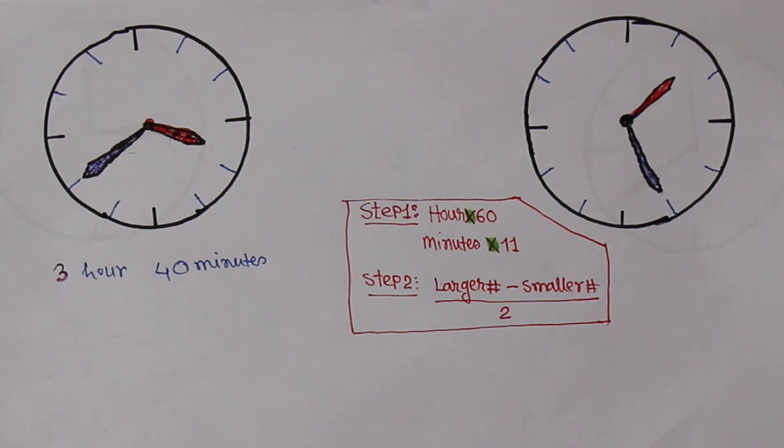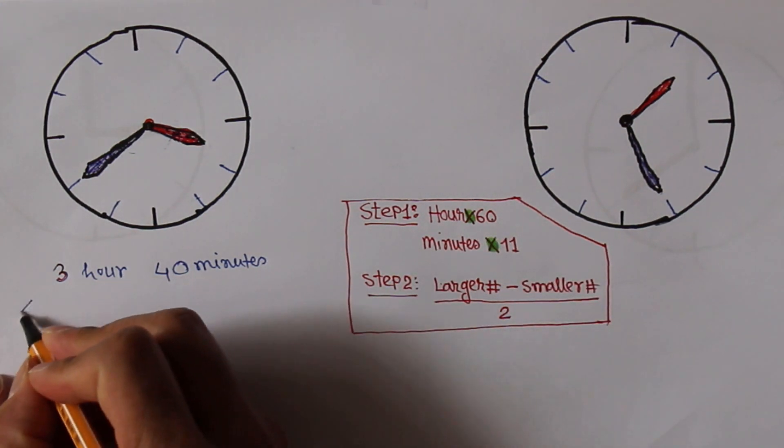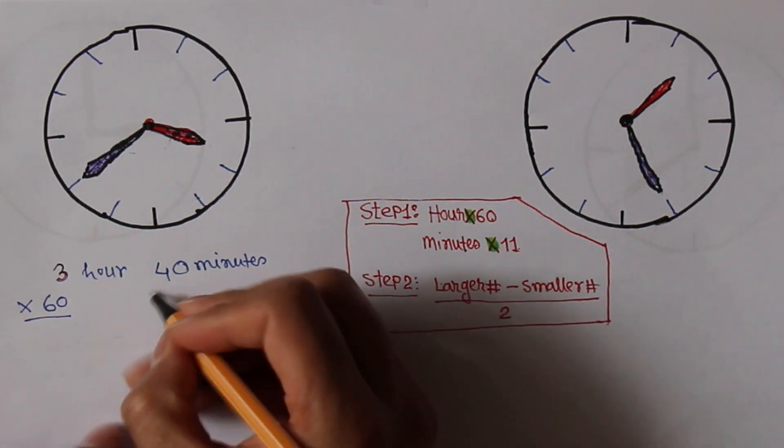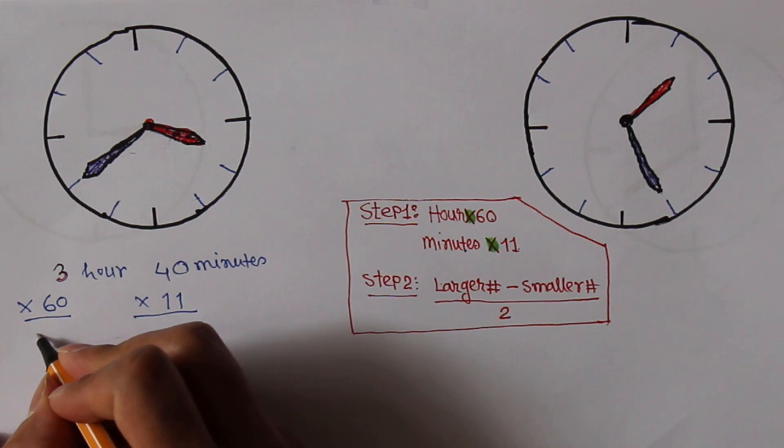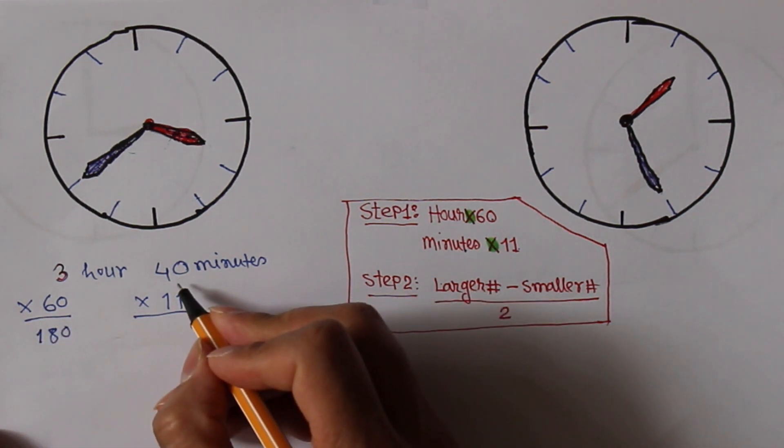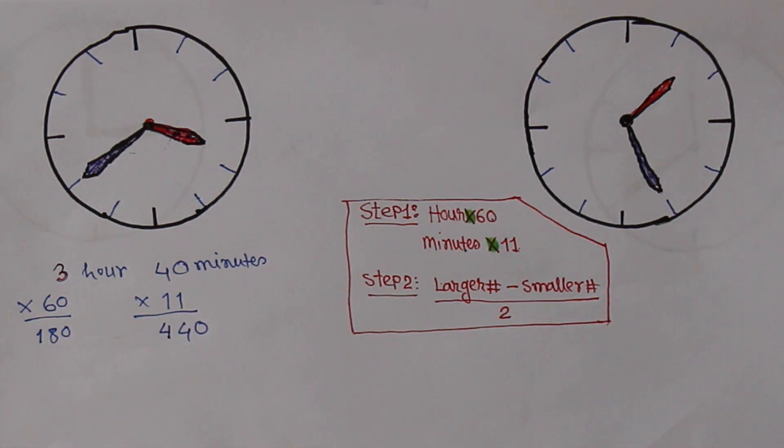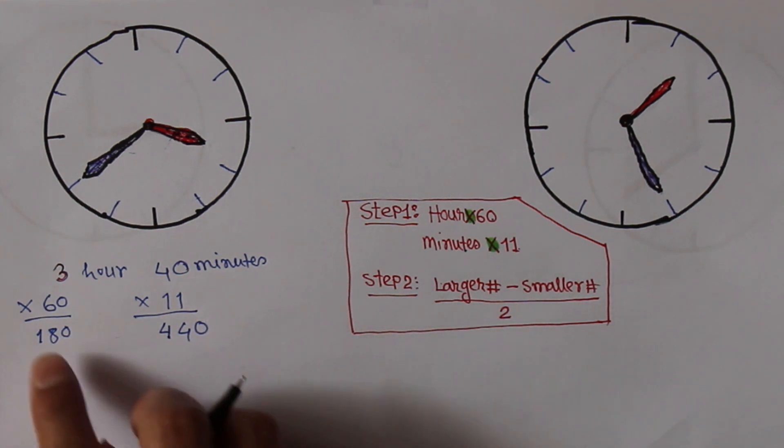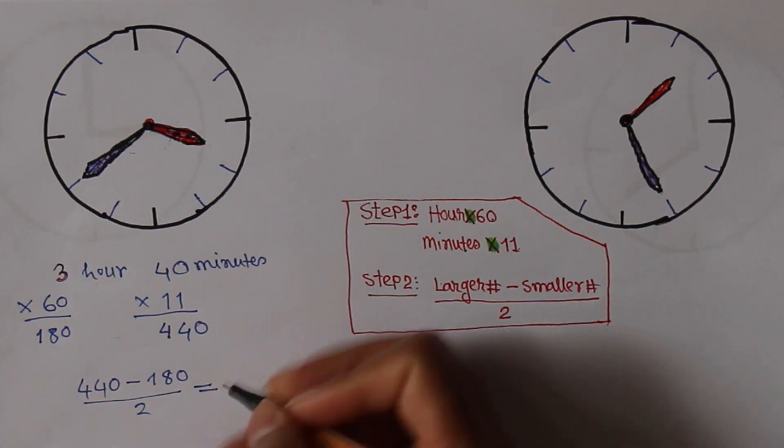First step: we have to multiply the hour by 60, that means 3 hours times 60, and multiply the minutes by 11, that means 40 minutes times 11. The result is 180 and 440. The second step is: subtract the smaller number from the larger number and divide by 2. So, 440 minus 180 divided by 2.